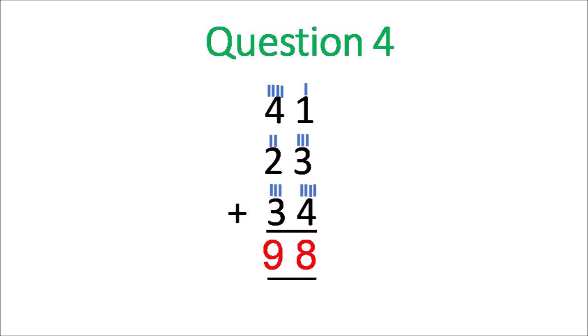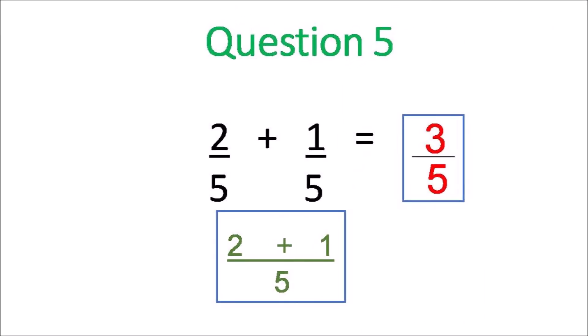And question 5, you're adding fractions so you add your numerators and just keep the denominator. So it's 2 plus 1 and you get three-fifths.